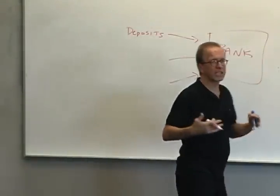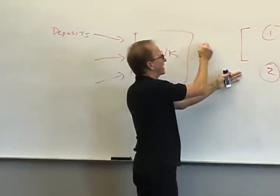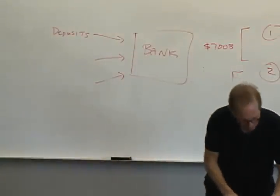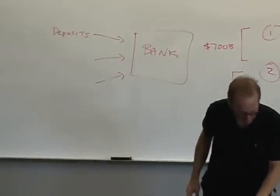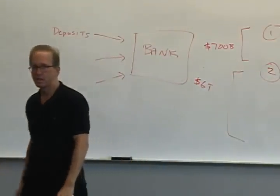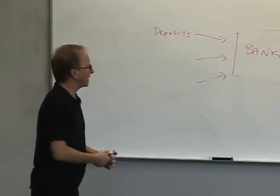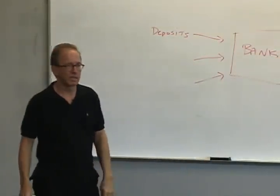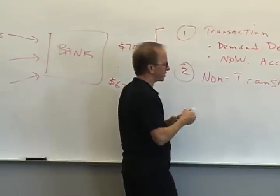But if we ask for the United States as a whole, we find that however much is in transaction accounts - I gave a number like $700 billion last time - there will be several trillion in non-transaction accounts. This is going to be in the neighborhood of $6 trillion for all the non-transaction accounts. It's not ten times as much, but it's like eight times as much.